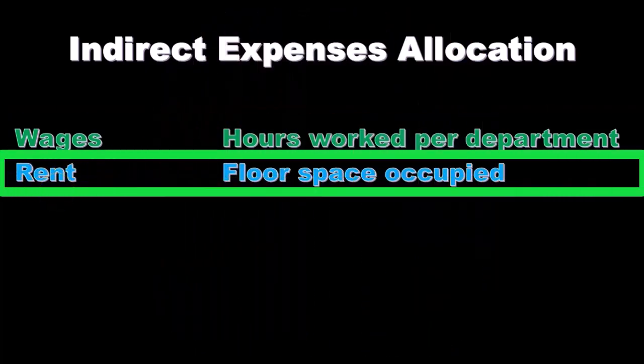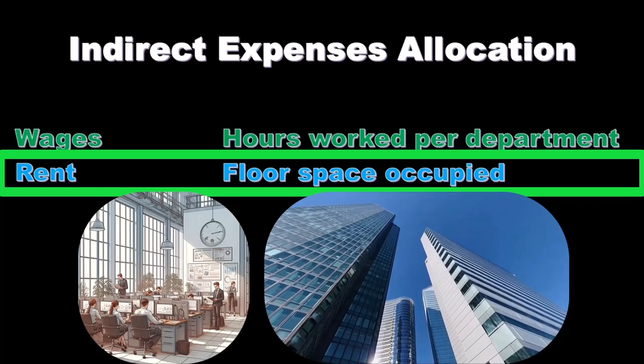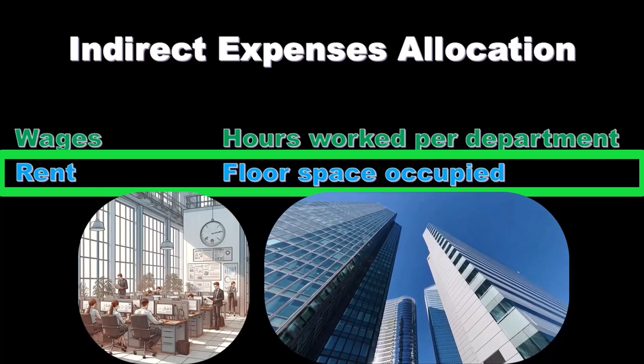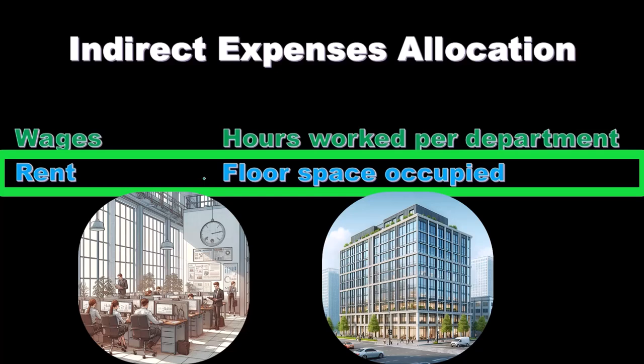If we're talking about something like rent — let's say we have three departments all in the same building and we have to apply the rent — they're all using the building in some way. A commonly used activity base there is floor space, because the square footage each department occupies is a reasonable basis. Larger departments would then absorb more of the rent.